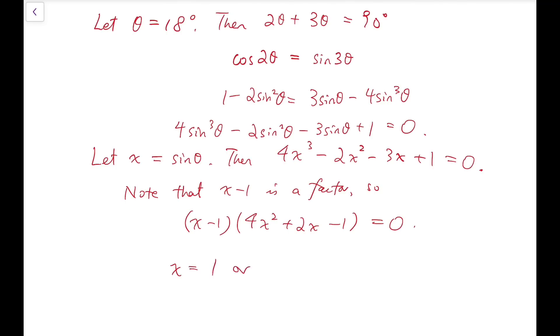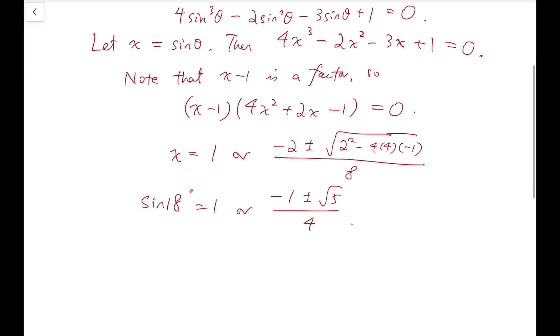So that means I can solve for x. So x is either 1 or minus 2 plus or minus, not 4 squared but 2 squared, 2 squared minus 4 times 4 times minus 1 over double of 4 which is 8. And so by simplifying we have minus 1 plus or minus square root of 5 over 4. So this is x and that sine θ with θ equals 18 degrees. And so I can replace this x at the bottom by sine 18 degrees.